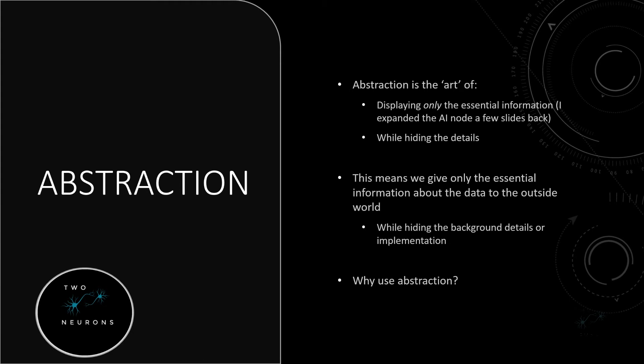To be fair, all of Blueprint is a form of abstraction — we don't see the C++ going on behind the scenes. You don't need to see it to know what the nodes do. So at the end of the day, this means we give only the essential information about the data to the outside world, to the people using it. Epic is hiding with Blueprints the background details or implementation of what we're seeing, which makes it really easy to script out games.